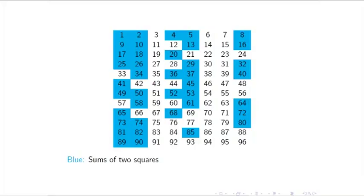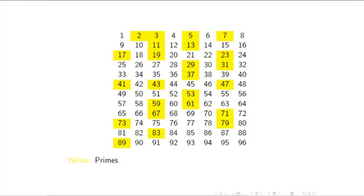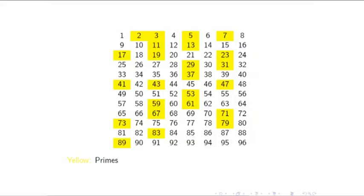Two is a special case — it's easy to check it's a sum of two squares. Let's think about odd primes. If an odd prime is in the 3-column or the 7-column, it isn't a sum of two squares. What about primes in the 1-column or the 5-column? Suspiciously, they all appear to be sums of two squares. So it looks as though all yellow numbers in the 1-column and 5-column are actually green. Let's overlay sums of two squares and primes to see.